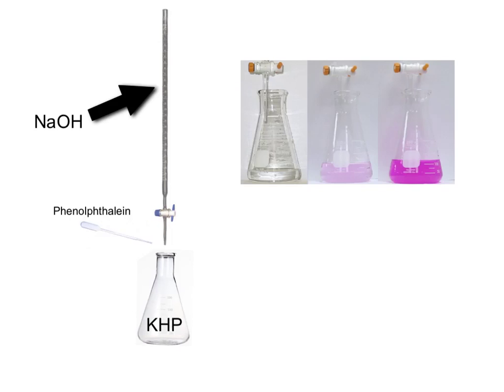Now the titration is just about ready to go, except that we need an indicator to tell us when the reaction is finished. For titrating the weak acid KHP with sodium hydroxide, phenolphthalein works well, so we want to add about 2 or 3 drops to the KHP solution in the flask. Phenolphthalein will turn pink around the neutralization point for this reaction, indicating that it's over.